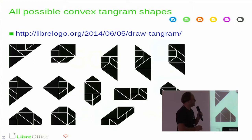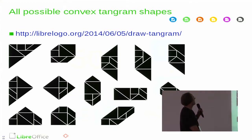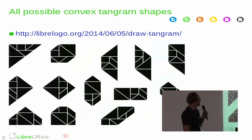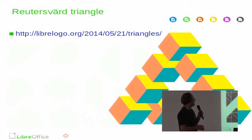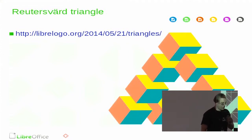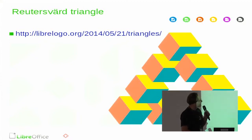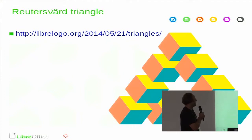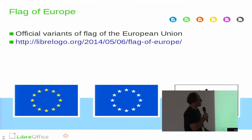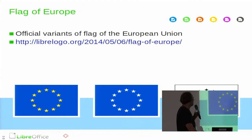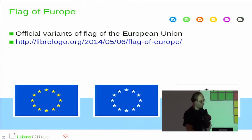It has also been proved that there are that many convex tangram shapes, and this was also produced very easily with LibreLogo and put on Wikipedia. Yet another example is the Penrose world triangle, which is a shape that is not possible in three dimensions — it's an optical illusion. Then there is the flag of the European Union in several versions, and also the mesh of the Rubik's cube.